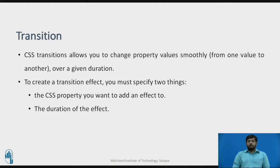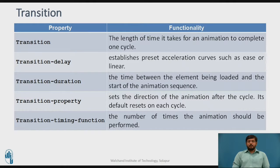Moving forward, we have transitions. CSS transitions allow you to change a property value smoothly from one value to another over a given period of time. To create a transition effect you must specify two things: the CSS property you want to add an effect to, and the duration of that effect. Transitions have five properties. The transition shorthand covers the full length of time for one animation cycle. Transition-delay sets the time before the animation starts. Transition-duration is the time between the element being loaded and the animation sequence starting. Transition-property sets the direction after the cycle. Transition-timing-function specifies how many times the animation should be performed.